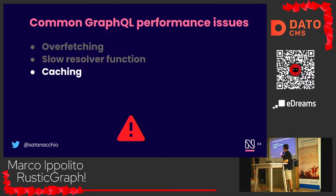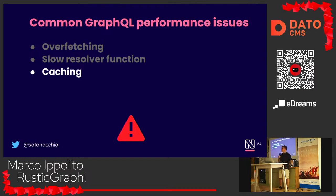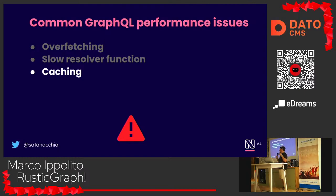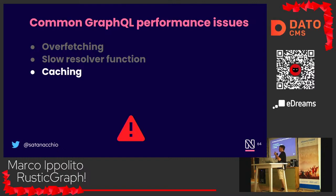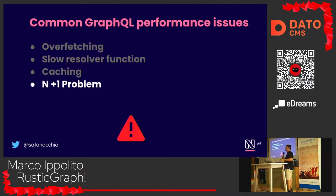Caching — I didn't write a slide for caching because caching in GraphQL is such a huge topic it requires a talk by itself. In GraphQL, you want to cache everything: on the frontend, on the backend, everywhere. It's what makes GraphQL very performant, because most of the time you're asking for static data. And the N+1 problem — we're going to see this in detail; it's also a very common problem and not the easiest one to explain.